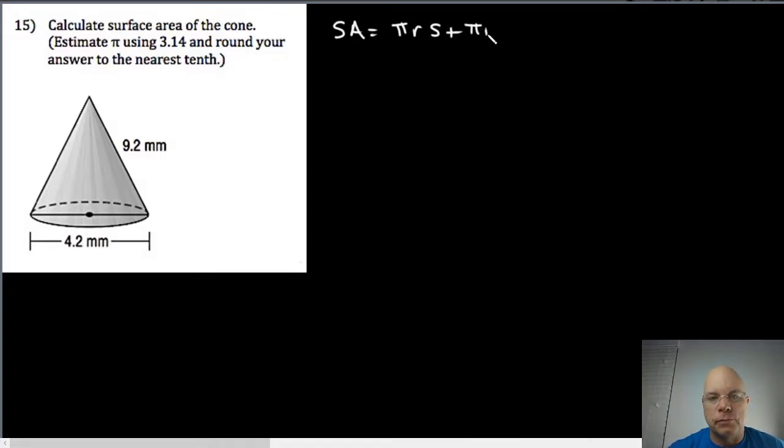The pi r squared is just the area of the base circle. But to get the lateral area, you multiply pi by the radius of the base circle, and then you multiply that by the slant height—the perpendicular distance from the vertex to the edge of the circle.